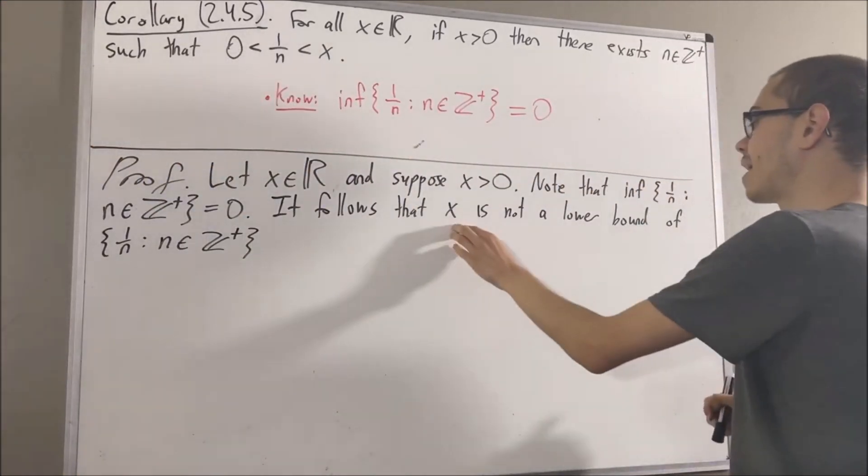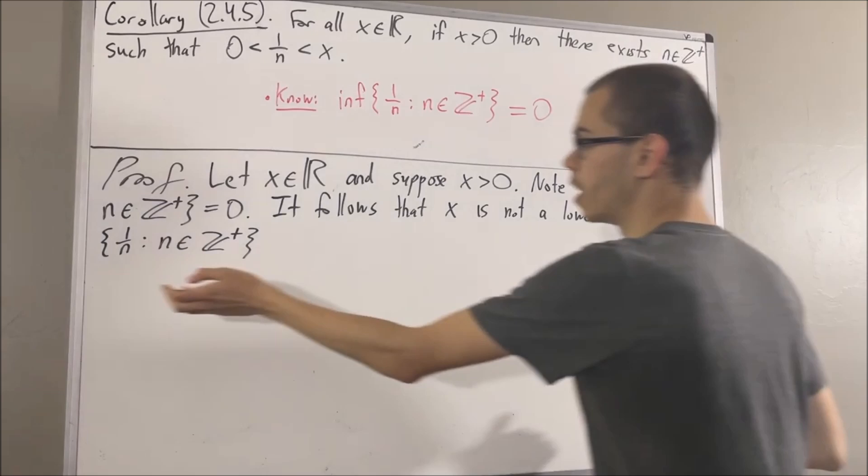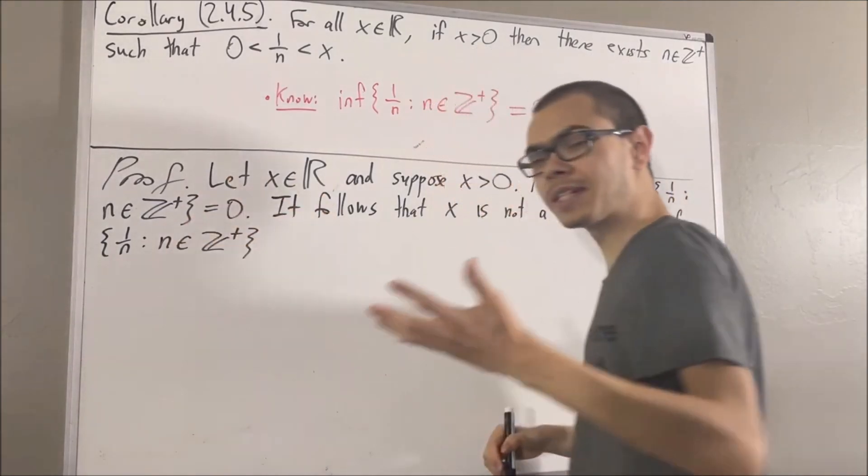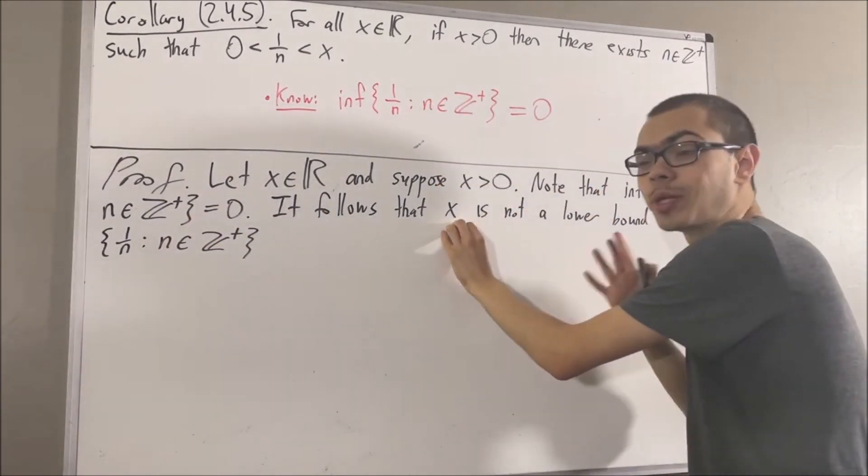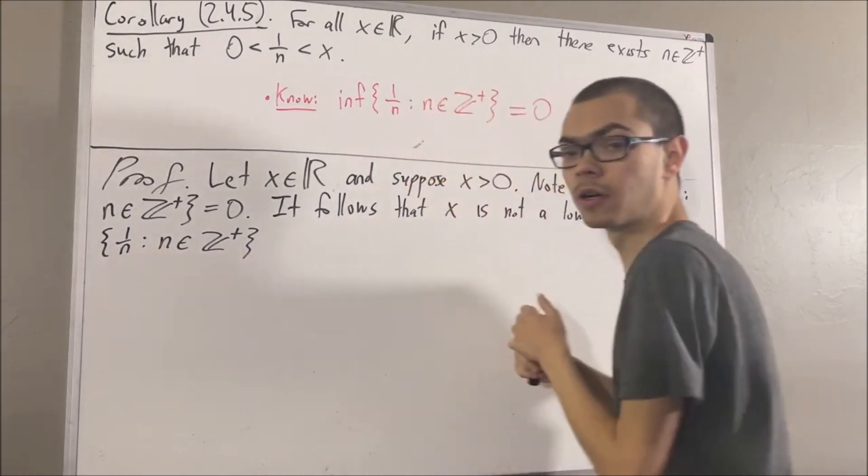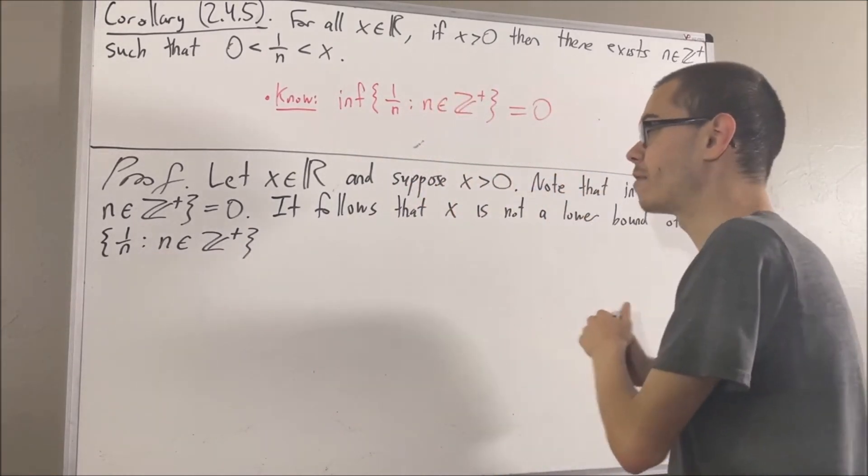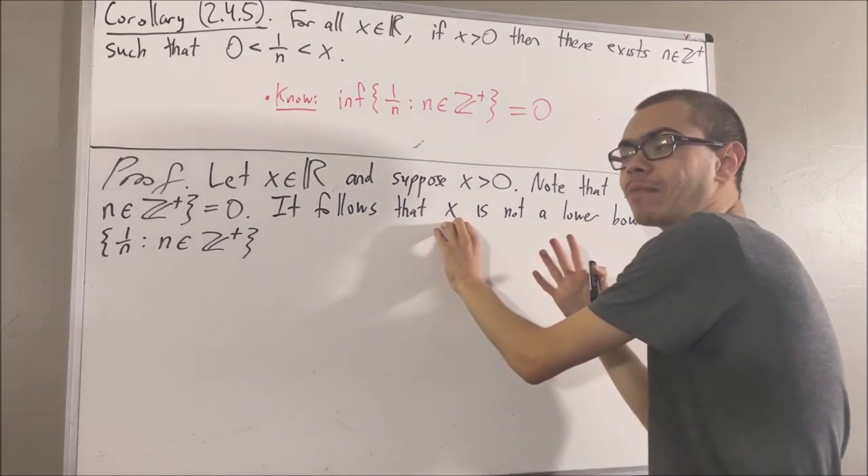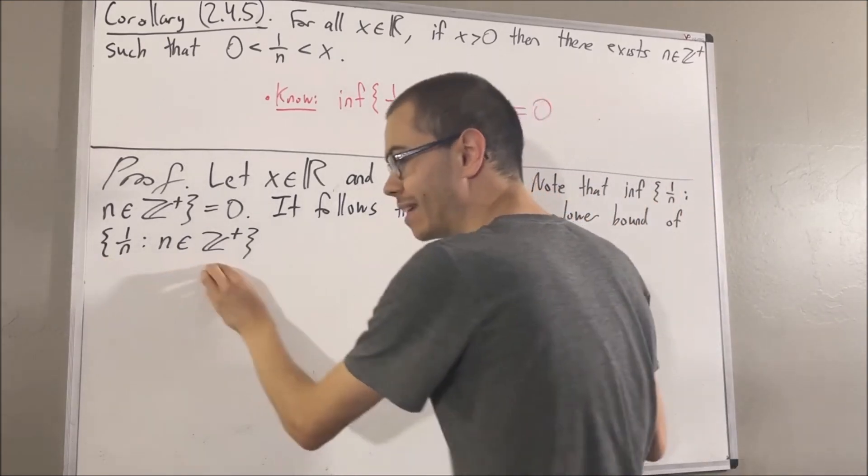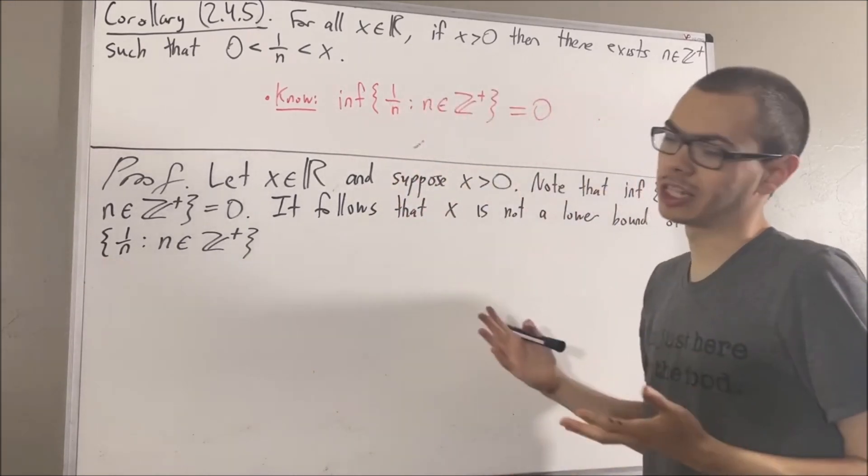And since x is not a lower bound of this set, this means it is not the case that x is less than or equal to every element of this set. We must instead have that x is strictly greater than at least one element in this set. I'll call that element q.